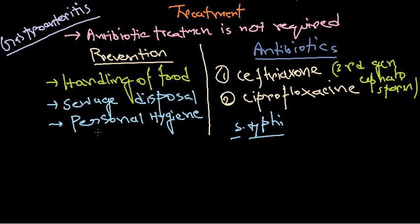Remember: proper food handling, correct sewage disposal, and personal hygiene are the key preventive measures. Most gastroenteritis infections occur in developing countries where hygiene and sanitary systems are poor. These diseases are related to socioeconomic conditions, so maintaining these prevention measures is essential for a healthy nation.